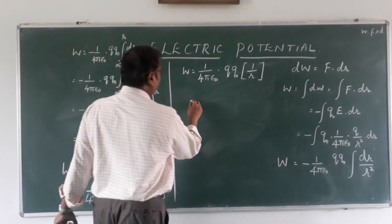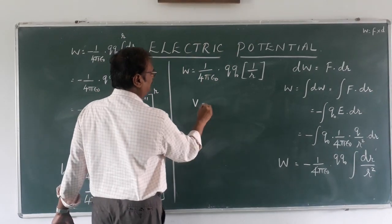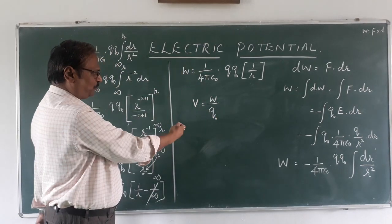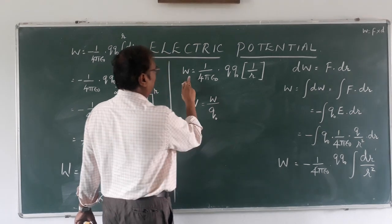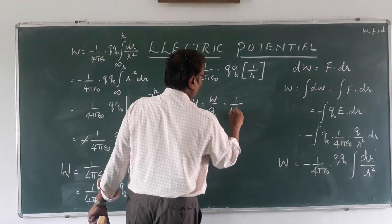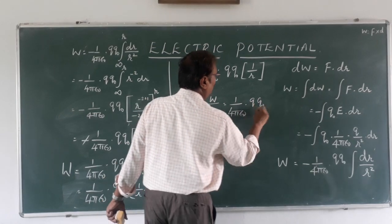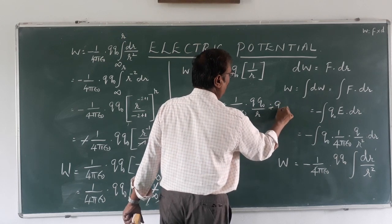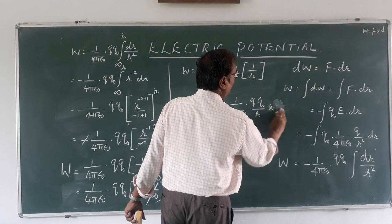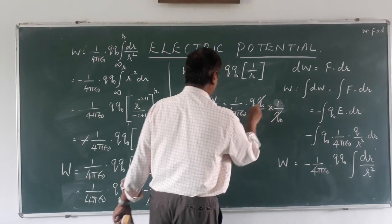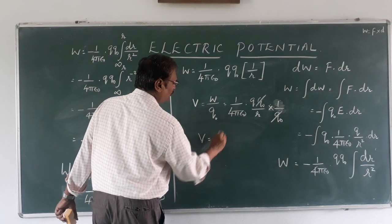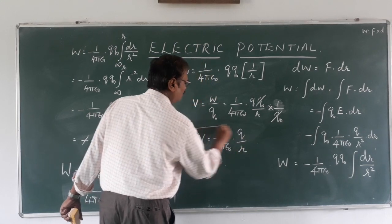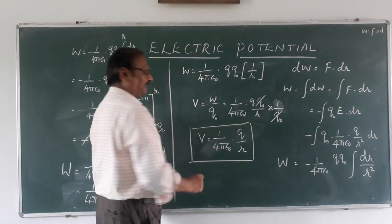Now we define electric potential. Electric potential V equals work done W divided by q naught — the work done in moving a test charge from infinity to the point. Substituting W as 1 upon 4 pi epsilon naught into q q naught upon r, divided by q naught, the q naught cancels, giving the formula: V equals 1 upon 4 pi epsilon naught into q divided by r.